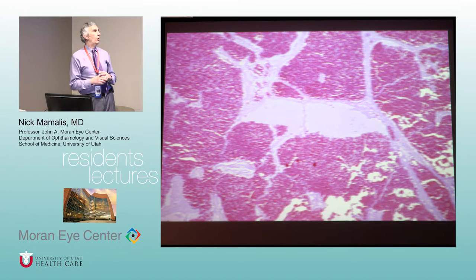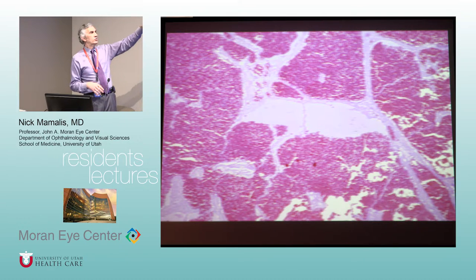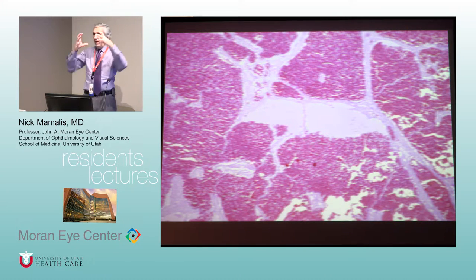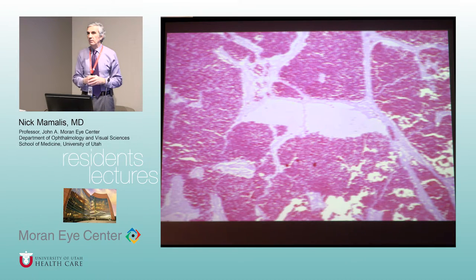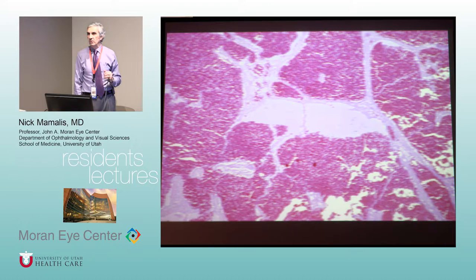How can we tell blood flow is slow through cavernous hemangiomas? You see layering — serum separating from red blood cells, just like a hematocrit tube. The flow is so slow that serum separates to the top and red blood cells settle to the bottom. These tend to be benign, but because they're in the closed intraconal space near the optic nerve, you do want to remove them before they cause problems.